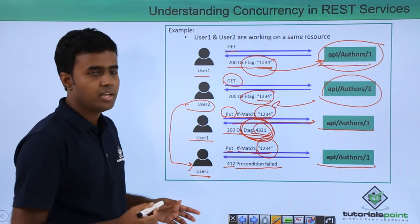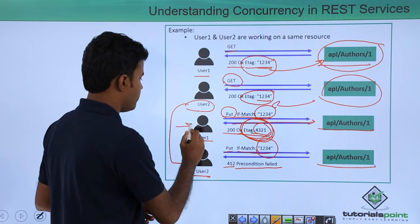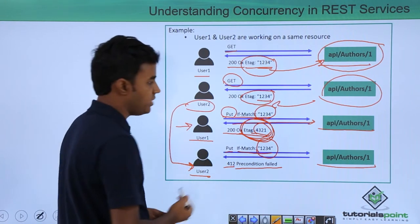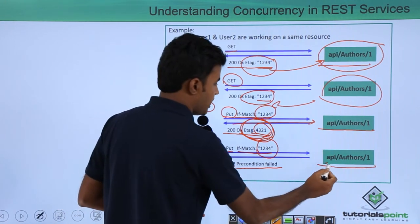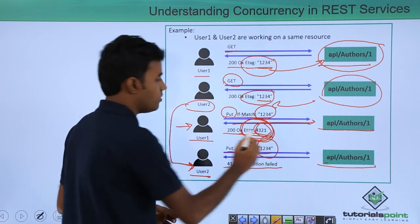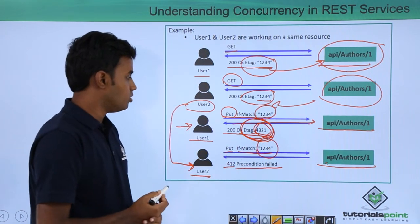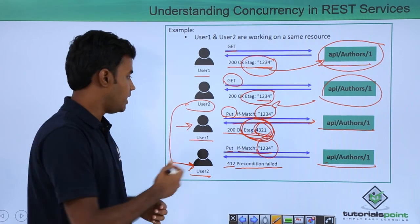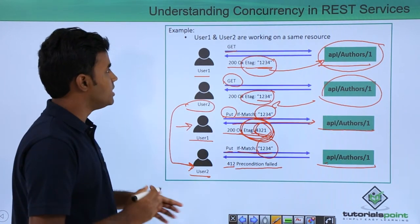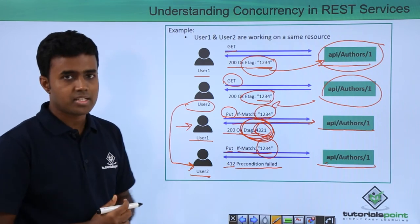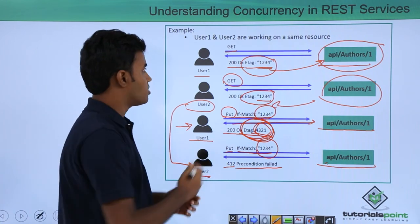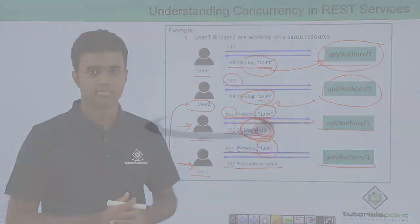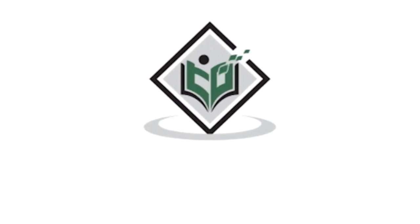In this way, the changes of user 1 are never lost and user 2 is forced to retrieve the latest data with the new ETag to update the resource. That is how concurrency is solved in REST — it is solved using ETags. Thank you, TutorialsPoint.com. Simply easy learning.